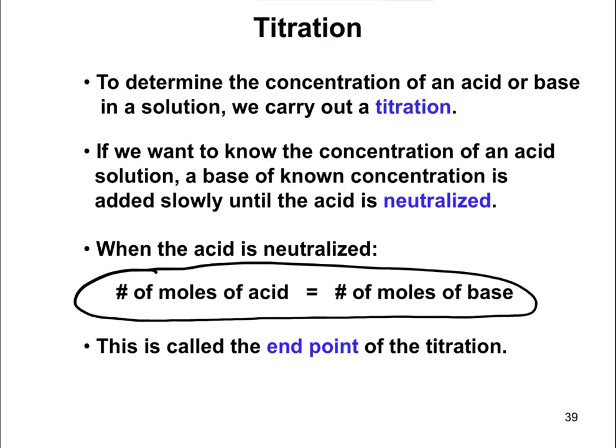So in other words, if we know how much base we have to add to neutralize the acid, we know how many moles of base we added. That tells us how many moles of acid had to be there in our unknown that we weren't sure about what the concentration was. If we know how many moles are there, we can then figure out the concentration.